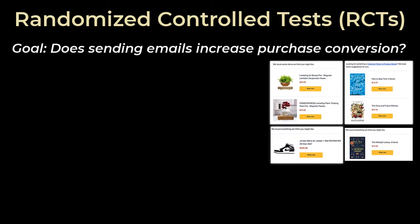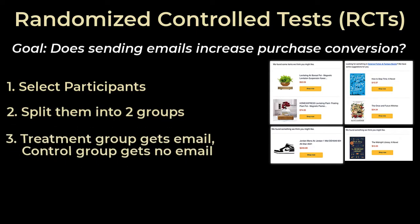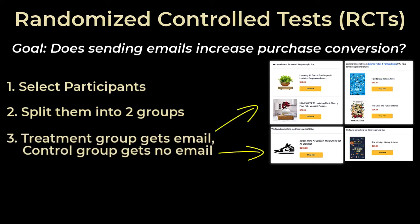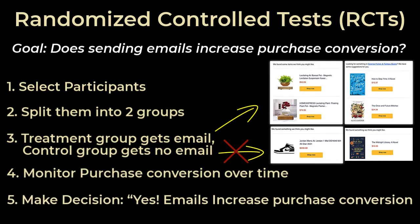This involves five steps. We first select the users to participate in the test, and ideally you'll select them based on a uniform criteria. Then we split these users into two groups evenly, and then we give one of the groups the emails and don't send the other group any email whatsoever. Then we monitor the purchase conversion for each user over time, and once the test is complete we make decisions — like yes, the emails increase purchase conversion, or just the opposite.